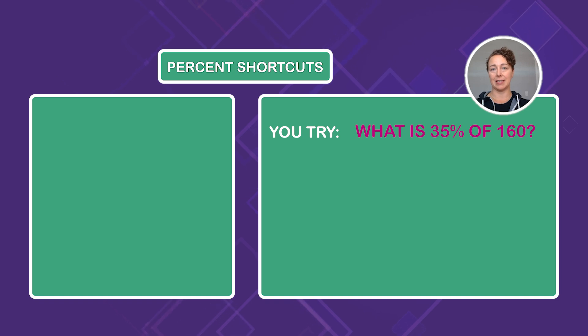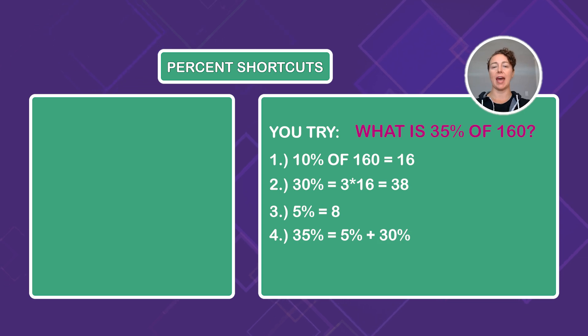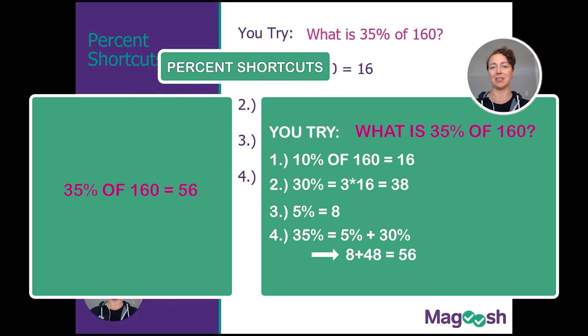What is 35% of 160? Pause the video to try to use the shortcut to determine quickly 35% of 160. Welcome back. You should have arrived at 56. Did you figure it out? 10% of 160 is 16. 30% is just going to be 10% three times. So that'll give you 48. And then 5% is 8. So 35% is just adding 5% and 30% together. So 8 plus 48 is going to give us 56. 35% of 160 is 56. If you got 56, awesome job. If you used the technique to get 56, even better. If you made a mistake, go back and check your arithmetic. And there you have it.